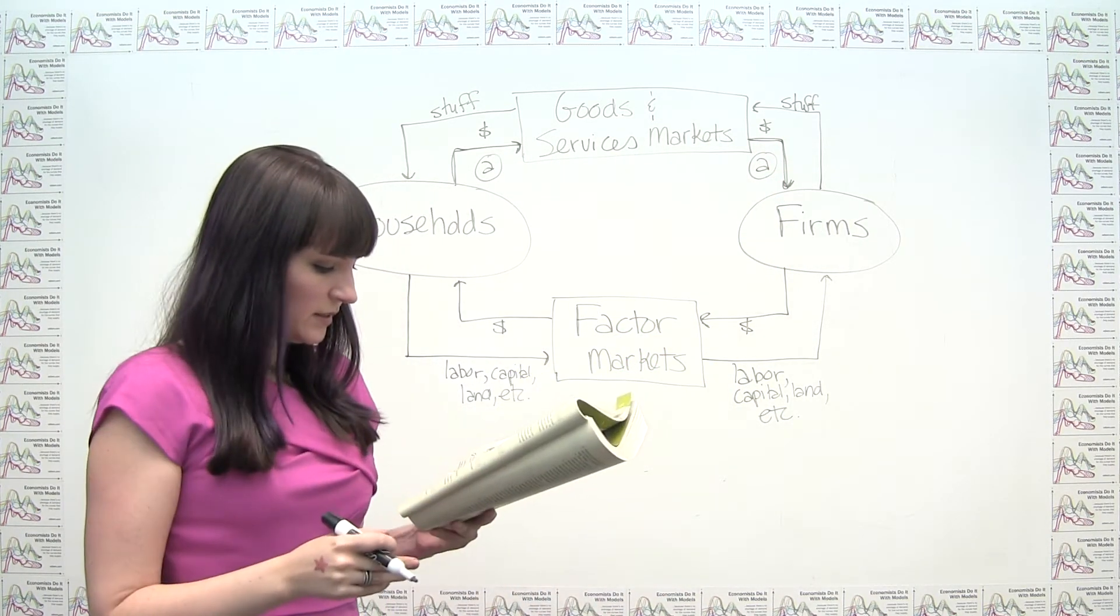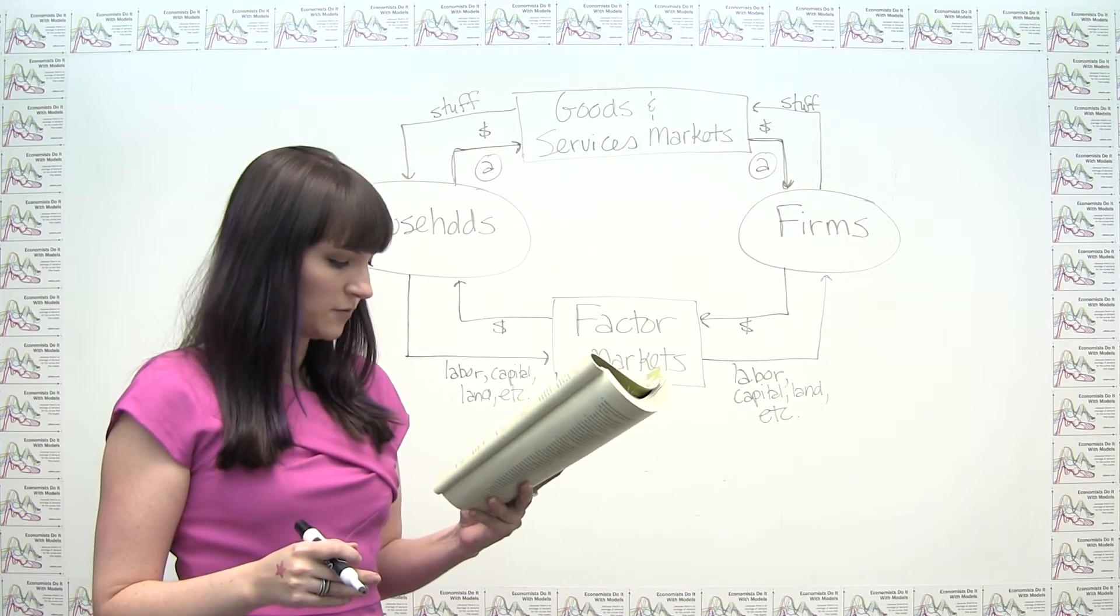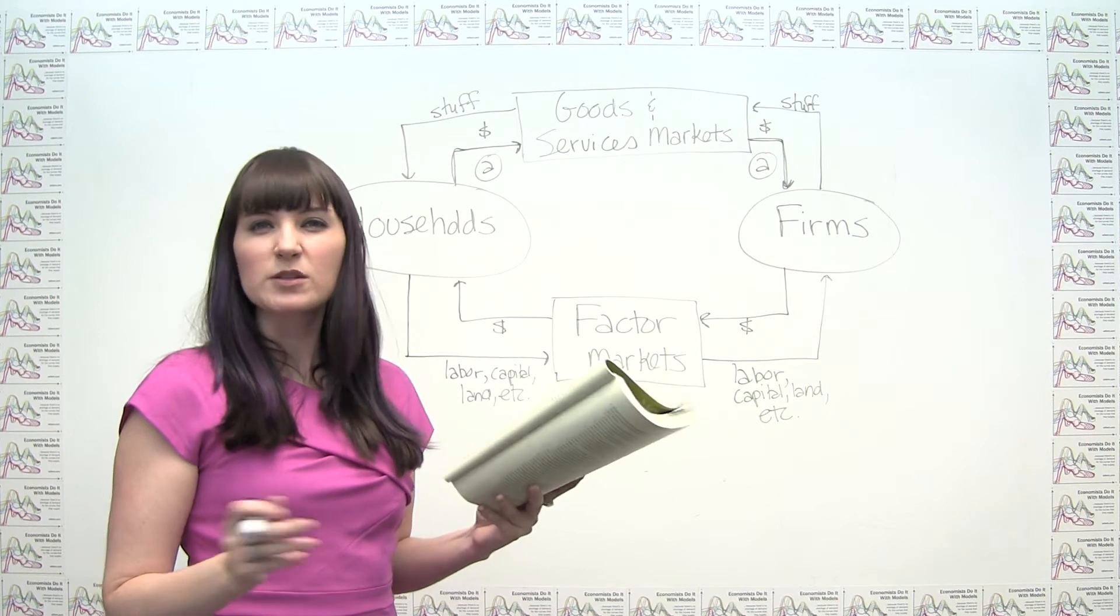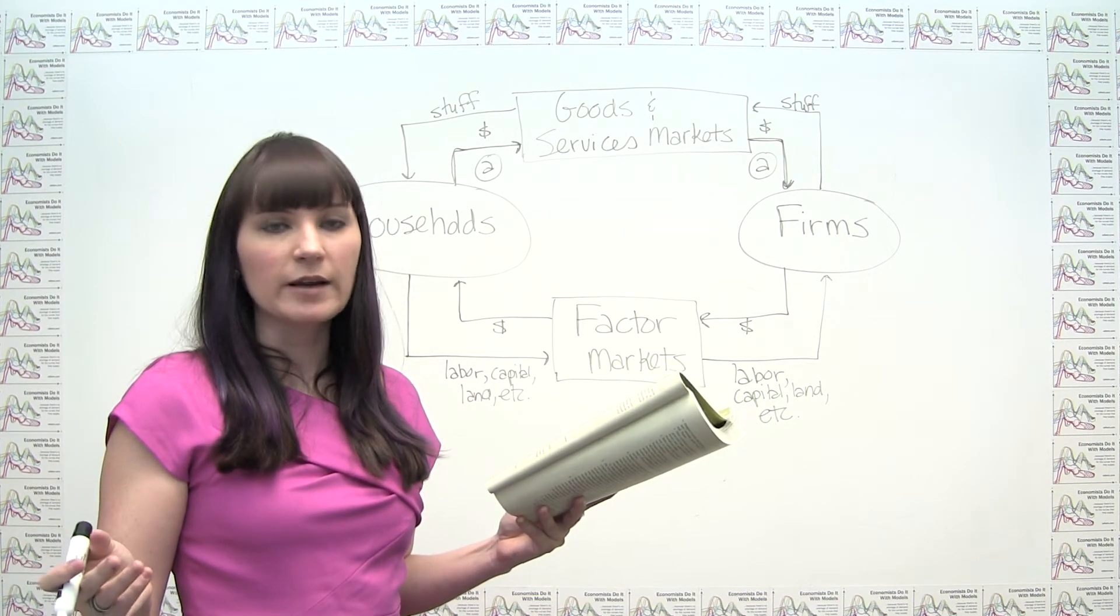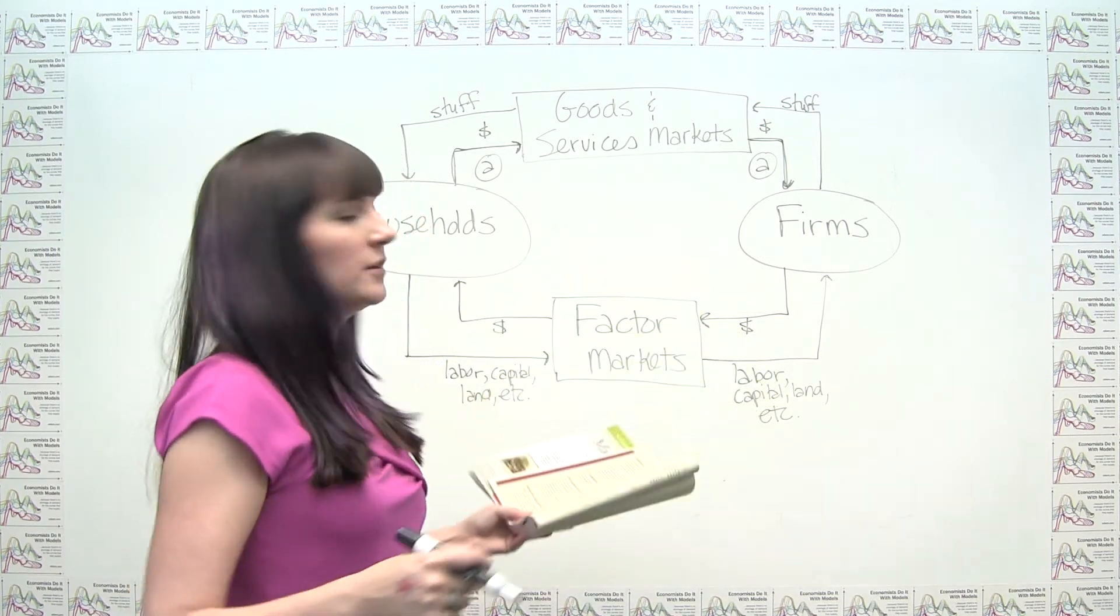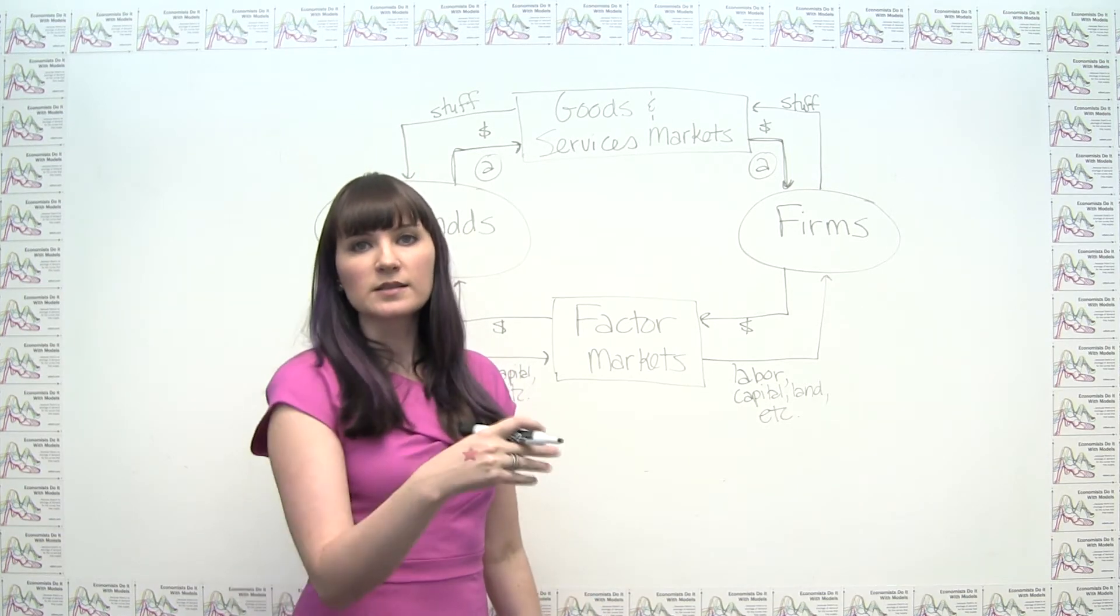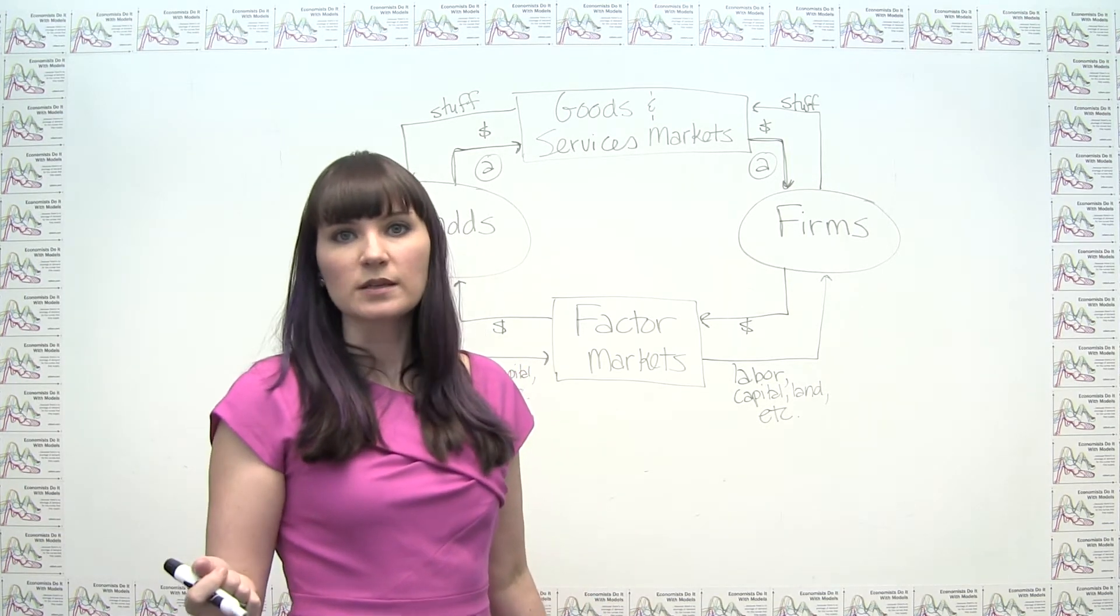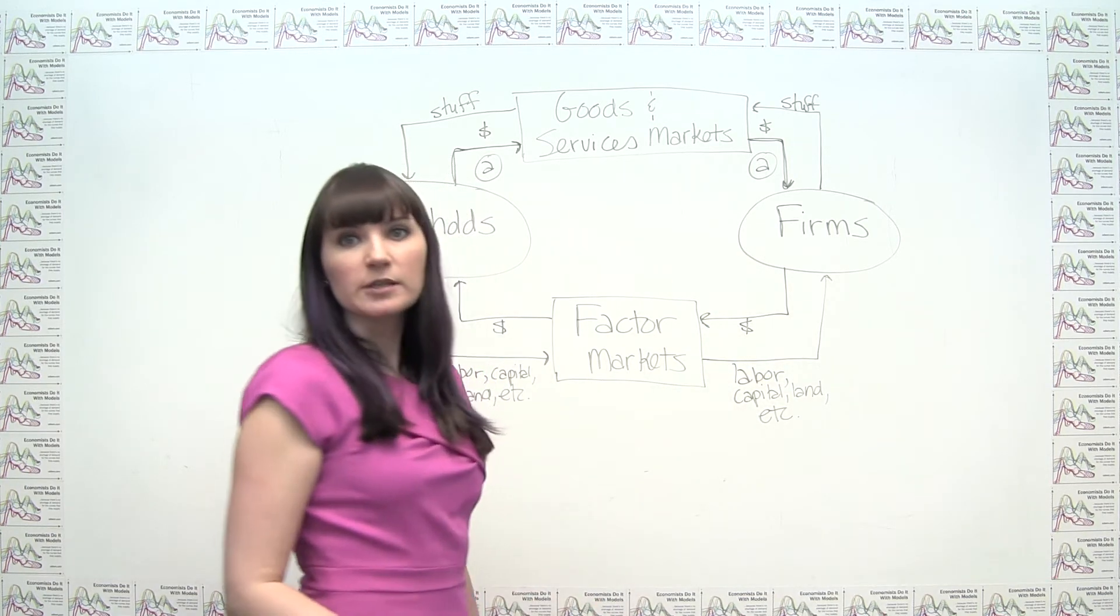Part B says, Stuart earns $4.50 per hour working at a fast food restaurant. I hope that this question was written a long time ago, because that's far below minimum wage right now. We can think about, well, even this small payment, where does it fit in this overall market? So now we're talking about a household selling its labor, or a person in the household selling its labor. So we're talking about a factor market down here.